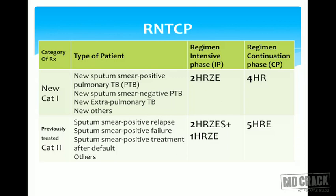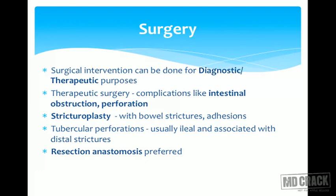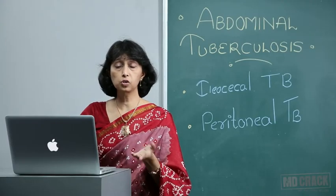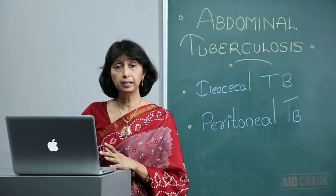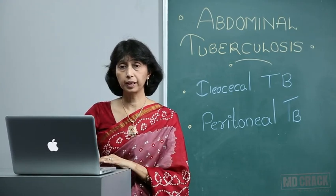Surgery is required in some patients — initially it may be diagnostic, but therapeutic indications include obstruction or perforation. A resection and anastomosis can be performed, or a strictureplasty where the stricture is removed and normal bowel is anastomosed to the ileocecal junction. In tubercular perforation, which is usually ileal with distal strictures, both the perforation must be sealed and the stricture corrected.